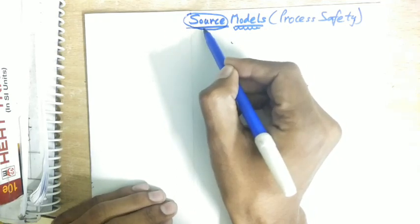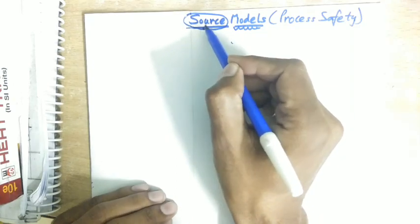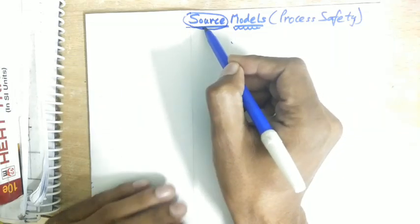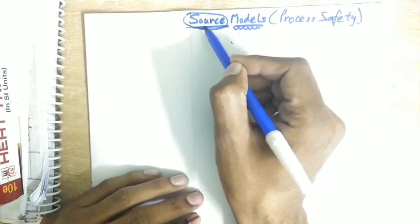The source could cause the flow of liquid or vapor outside it, and hence there could be toxic gas release, toxic material release, or hazardous material released outside.